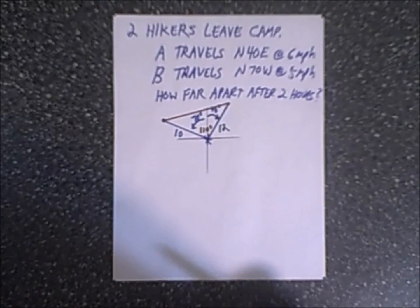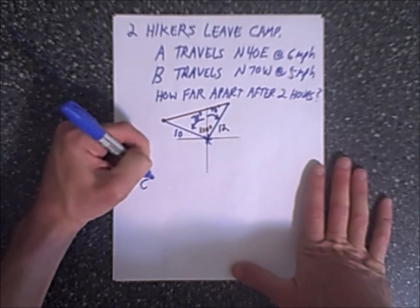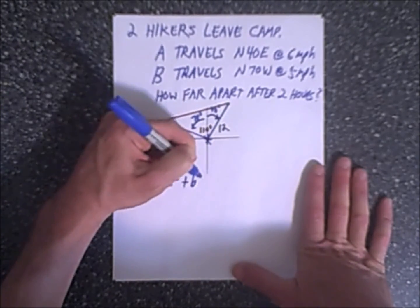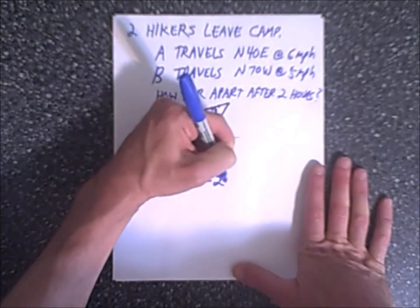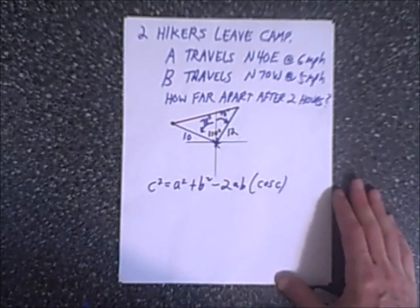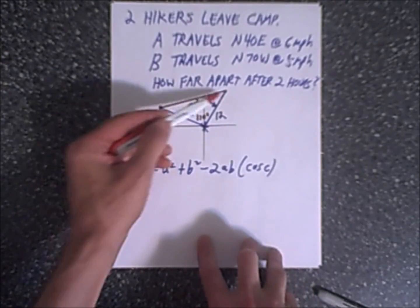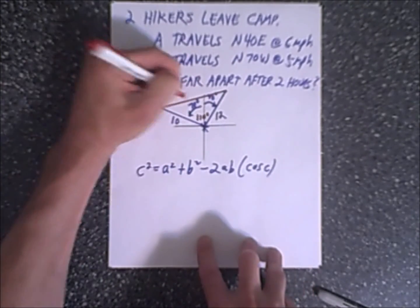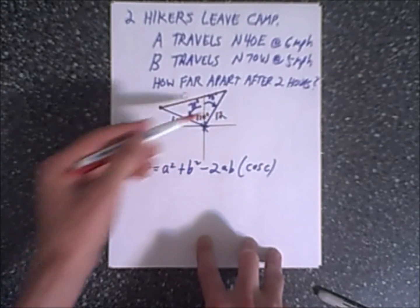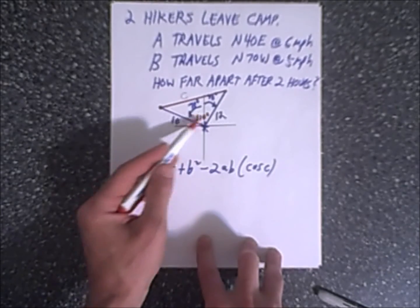And as you might recall from trigonometry, when you have two sides and the included angle, you can find the rest of the components of this triangle. More specifically, this side, using the law of cosines. So for a quick review, the law of cosines formula is c squared equals a squared plus b squared minus 2ab times the cosine of c.